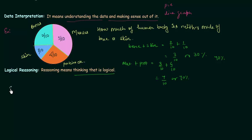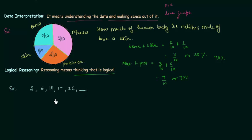I have a series: 2, 5, 10, 17, 26 — and we have to find out the next number. This is the series given to us and we have to find out the next number. Let's see how to do this.